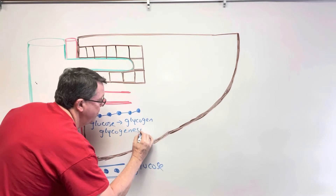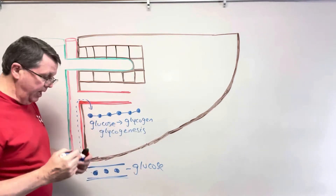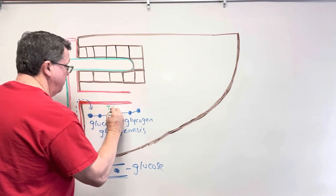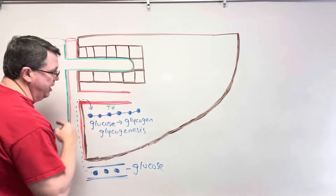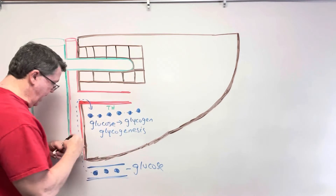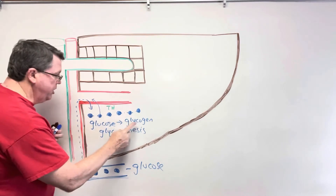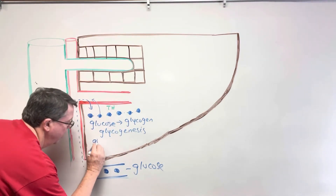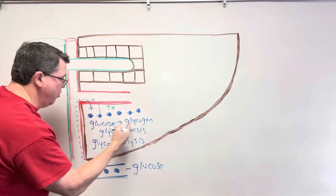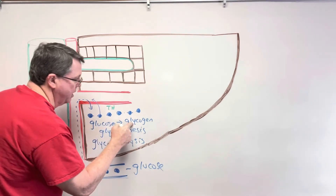Between meals, the body needs glucose, so we need to break glycogen down. This is where thyroid hormone comes in — it makes enzymes that break the bonds between the glucose molecules. The glucose can then enter the bloodstream. Going from glycogen to glucose is called glycogenolysis, and going from glucose to glycogen is glycogenesis.